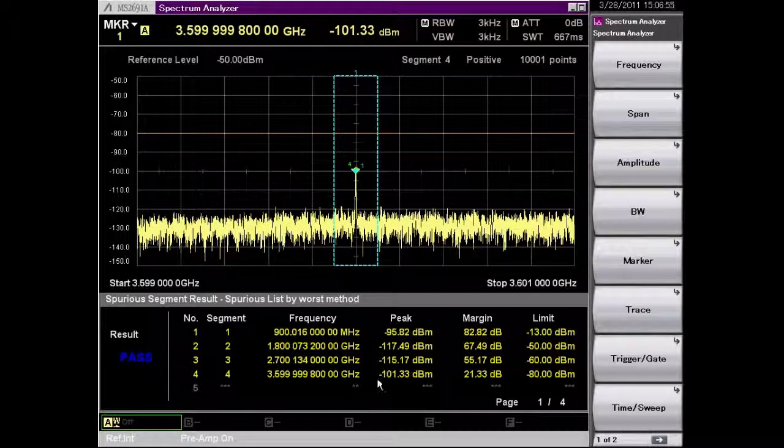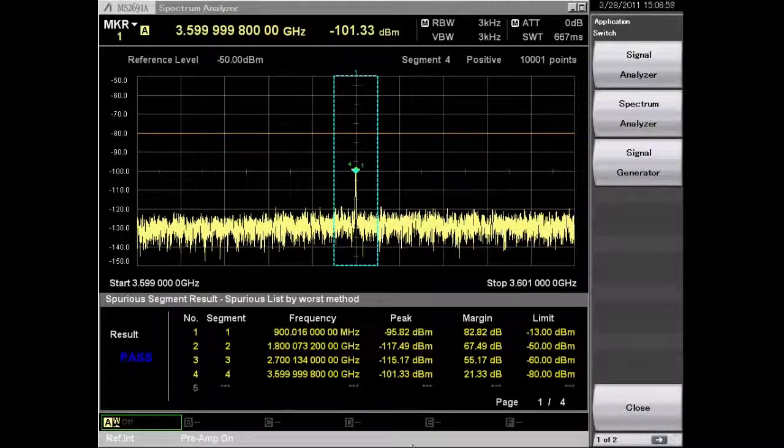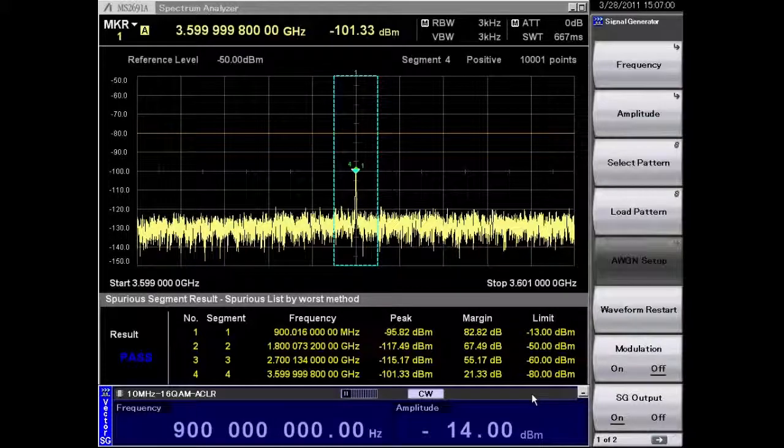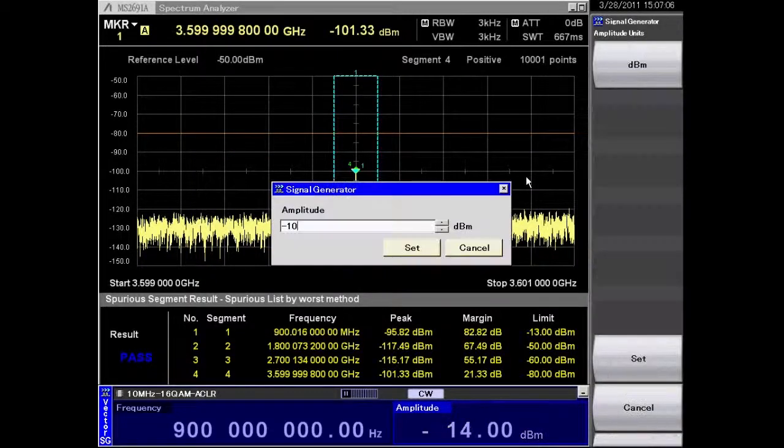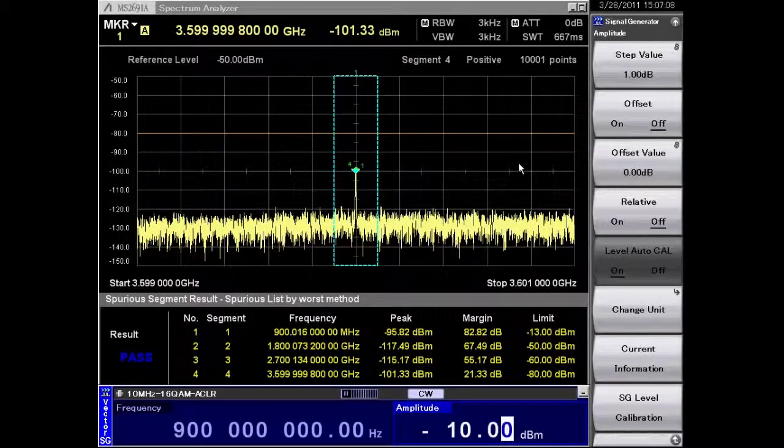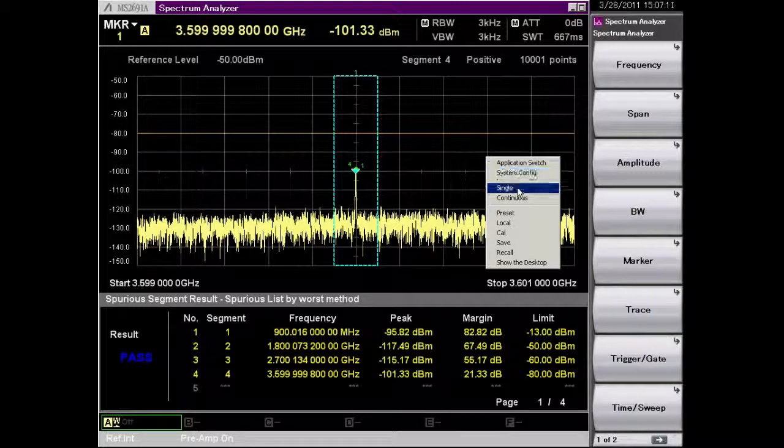Now I'd like to create a condition where there will be a failure. So on the signal generator we'll change the power level to minus 10 dBm. And we'll go ahead and sweep that again.